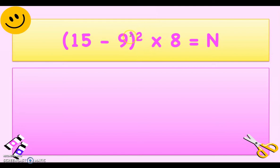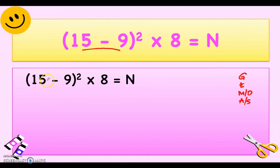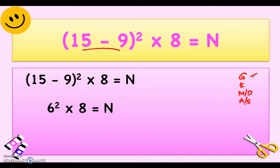Next: 15 minus 9 in parenthesis with an exponent of 2 outside the parenthesis, times 8, equals n. Following the GEMDAS rule, we perform what's inside the parenthesis first. So we have 15 minus 9, which is 6. After that there is an exponent outside, so we copy it. No more groupings — we perform the exponent: 6 squared is 6 times 6, which is 36.